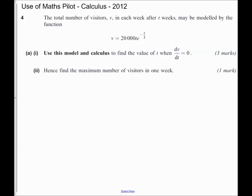So let's have a look at an exam question. This is from the calculus paper in 2012. The total number of visitors v in each week after t weeks may be modeled by the function v equals 20,000t e to the power minus a third t.